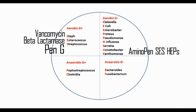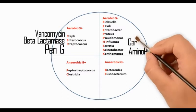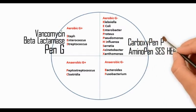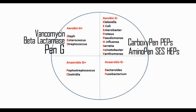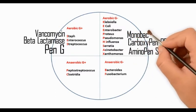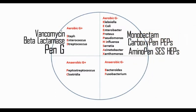Aminopenicillins work against Staph, Streptococcus, and Enterococcus, along with Haemophilus, Enterococcus, E. coli, and Pseudomonas. Carboxypenicillins work against Pseudomonas, Proteus, and E. coli.